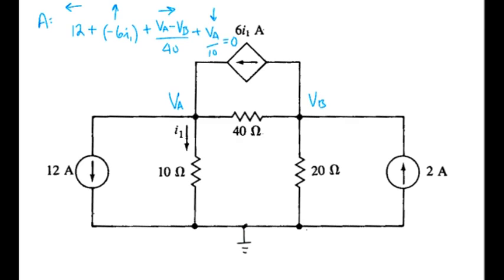Let's move on to node B. Again, I'll start with the westbound current. We have VB minus VA over 40.